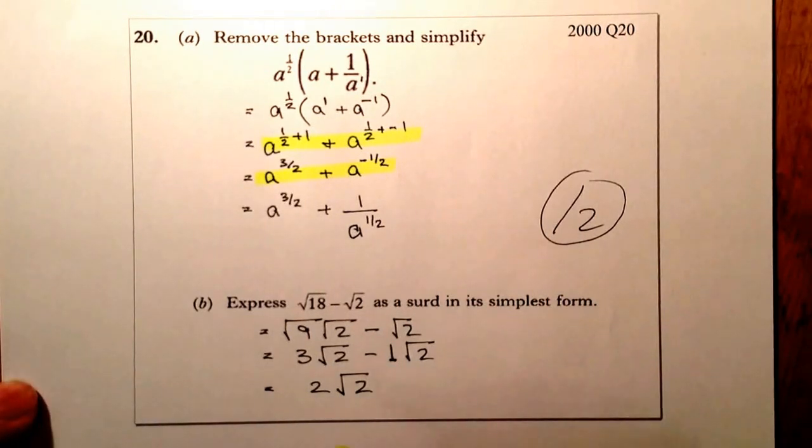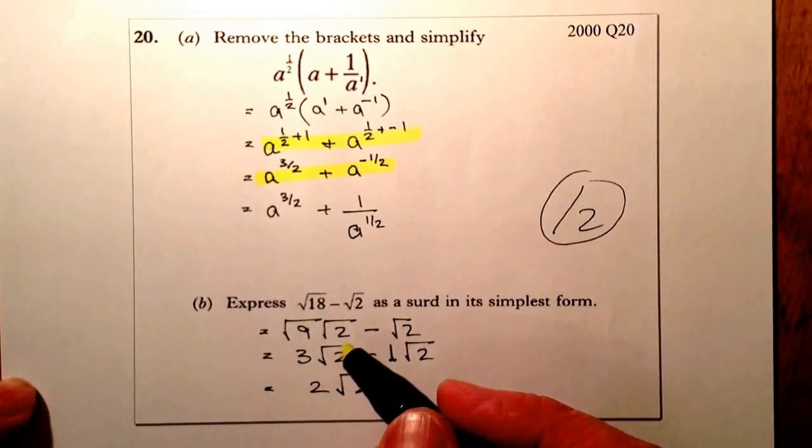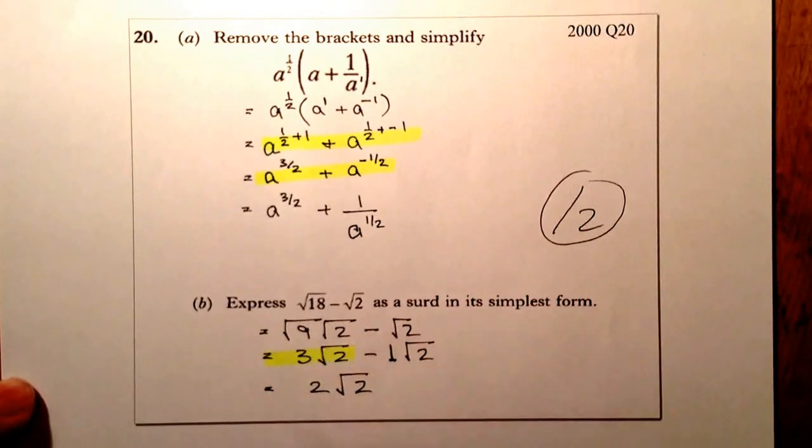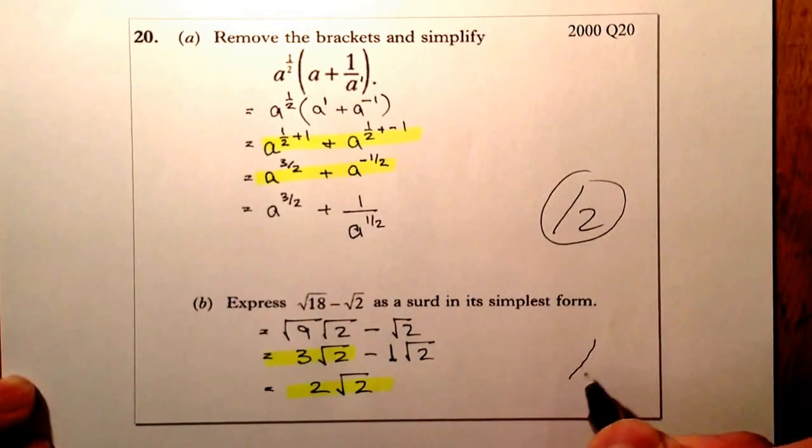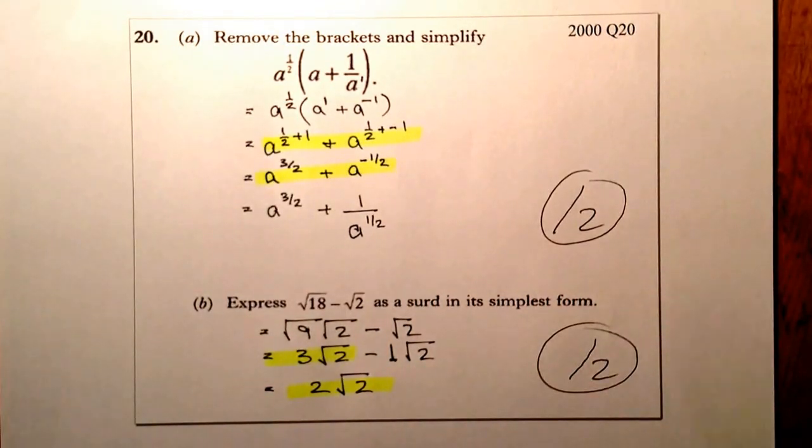Right, so I'm going to go for one mark for simplifying this down here to 3 root 2, and one mark here for getting 2 root 2 as a final answer. So this one here, also out of 2 marks.